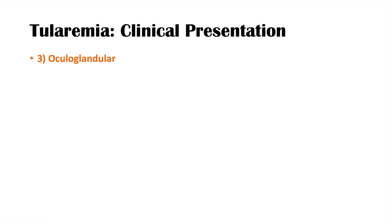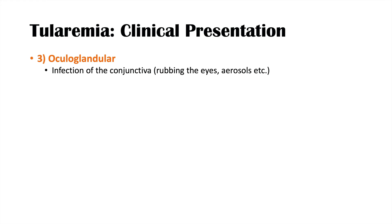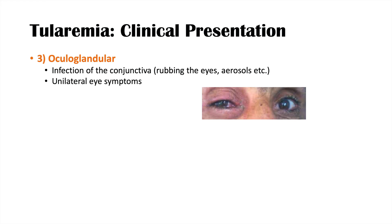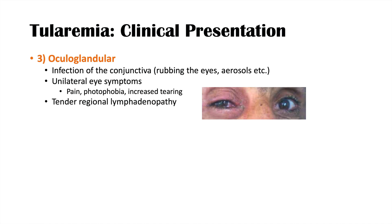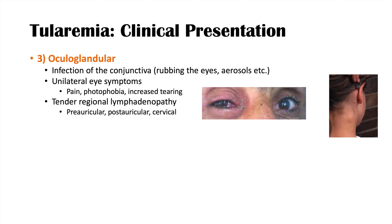The third form is oculoglandular tularemia, involving both the eye and the lymph nodes. There is an infection of the conjunctiva, usually through rubbing the eyes with contaminated hands or via aerosols. It is usually unilateral — one eye is affected. You may see a red swollen eye with chemosis and tearing, along with pain and photophobia. Tender regional lymphadenopathy is also present, often preauricular or posterior auricular, as well as cervical chain involvement.